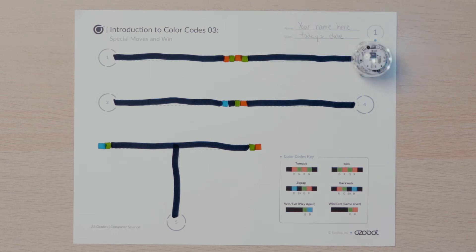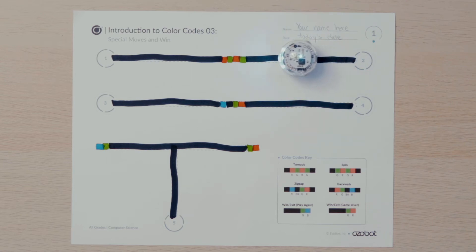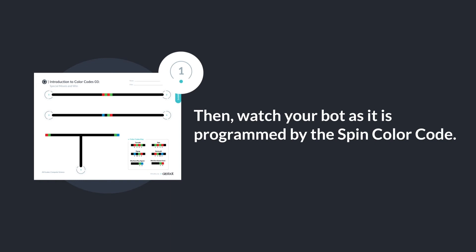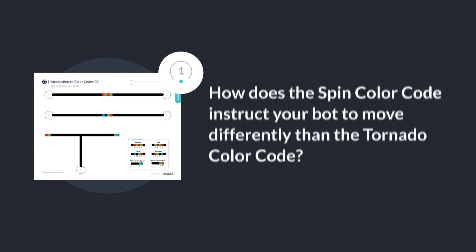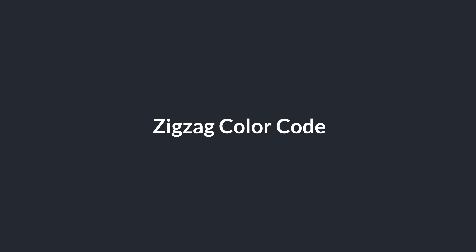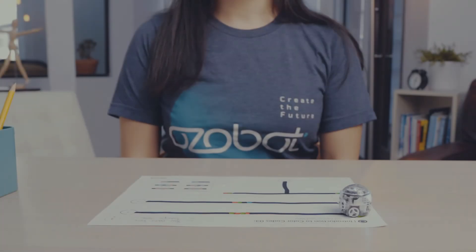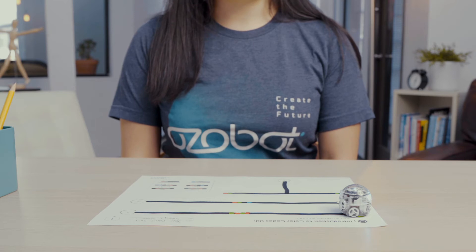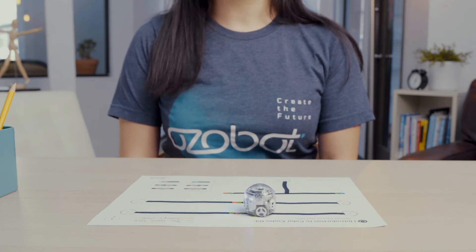Are you ready to see another special move in action? Put your bot on start number two and observe how it uses its line sensor to follow the pathway and its color sensor to process the spin color code. Then watch your bot as it is programmed by the spin color code. How does the spin color code instruct your bot to move differently than the tornado color code? When you programmed your bot using the spin color code, it should have spun around two times. This time, the bot did not change speed. Did you notice the lights on the front of your bot also flashed as it spun?